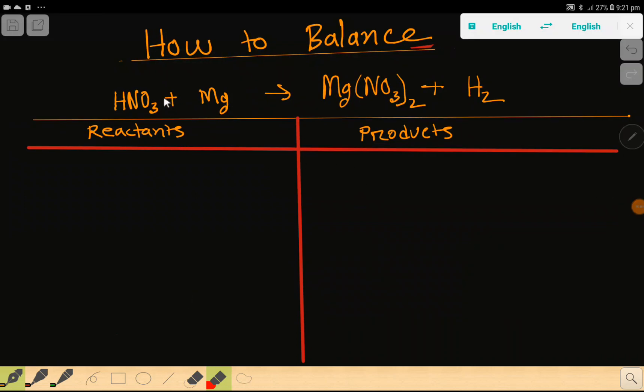Welcome to this class. Today we are going to balance this reaction. This is nitric acid, this is magnesium, and this is magnesium nitrate and this is hydrogen. To balance this reaction, at first we have to do a table.